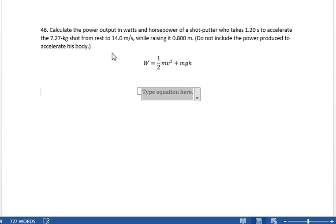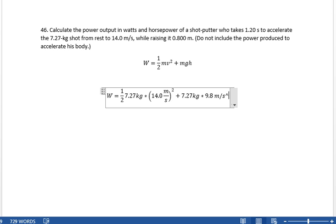All right, that's the total amount of work that was done on this. So the work is one half of 7.27 kilograms times 14.0 meters per second squared plus 7.27 kilograms times 9.8 meters per second squared times 0.8 meters.